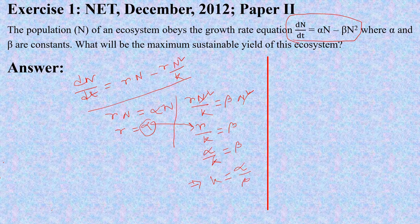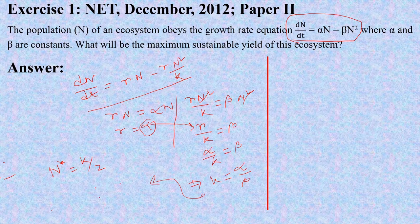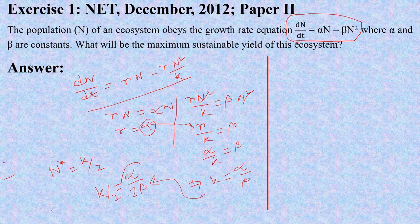As we know, N* at maximum sustainable yield is equal to K by 2. So from here we can write K by 2 equals alpha by 2·beta. So this is our answer: the maximum sustainable yield is alpha by 2·beta.